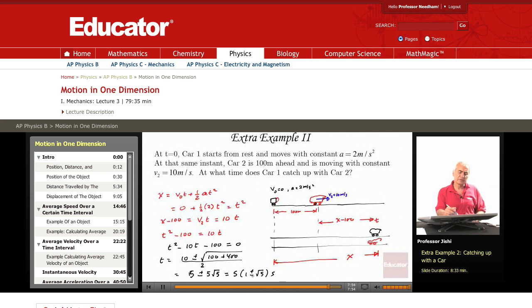Now clearly, if I take the minus sign, I end up with negative time. That doesn't make sense. So I have to choose the plus sign. The time finally is 5 into 1 plus root 5 seconds.